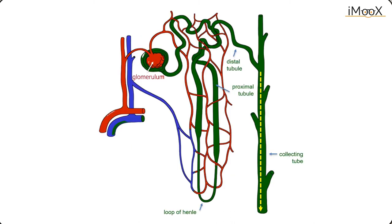Following passage through the glomeruli, the filtrate enters the tubular system. This tubular system is designed to selectively remove substances, but also to resorb particles for maintenance of systemic body homeostasis.